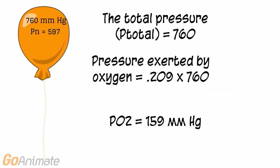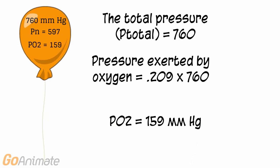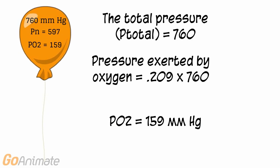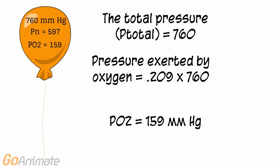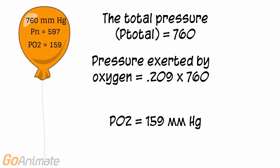Likewise, if air is about 21% oxygen, then the partial pressure of oxygen is 0.209 times 760, or 159 mmHg. We say that the partial pressure of oxygen, or PO2, is 159 mmHg.